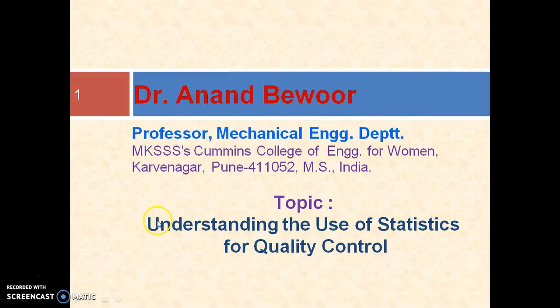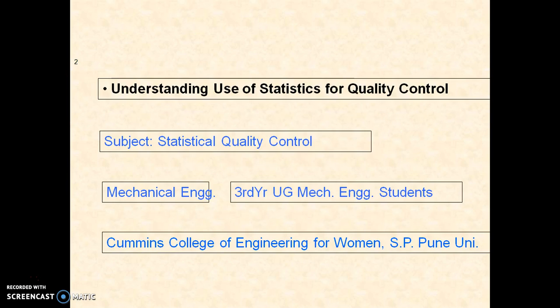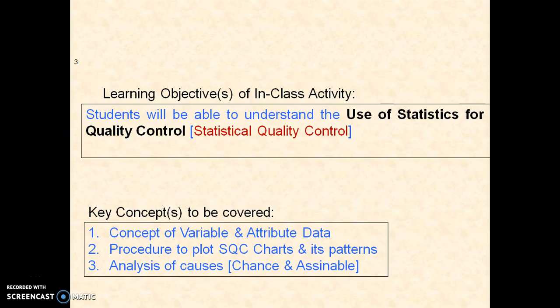Today we understand the use of statistics for quality control. This is part of the subject Statistical Quality Control. The basic concepts we are studying here include what is variable and attribute data, the procedure to plot SQC charts and understand its patterns, and the different types of causes - chance and assignable causes.